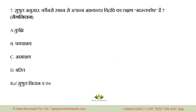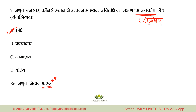Question number 7: According to Sushruta, in which location of Abhyantar Vidradhi is Marut Kopa (Vata aggravation) the lakshana? Total 10 locations are given. Options: A. Kukshi, B. Pakwashaya, C. Amashaya, D. Basti. Right answer is option A — Kukshi. Remember the mnemonic: 'Marut ko Kukshi.' Reference: Sushruta Nidana, Navama Adhyaya, Shloka 20. All 10 locations of Abhyantar Vidradhi with their specific doshas/lakshanas must be memorized.